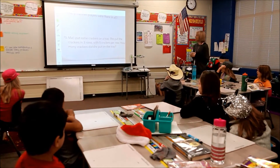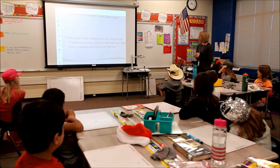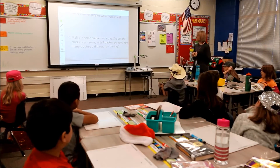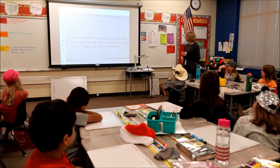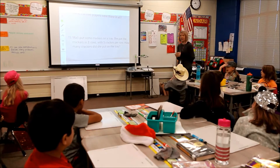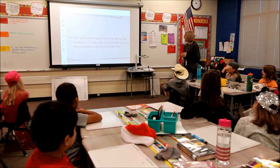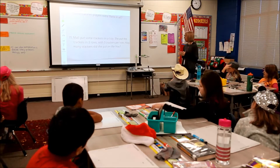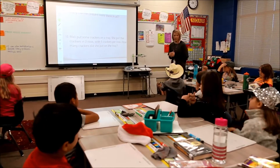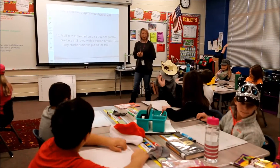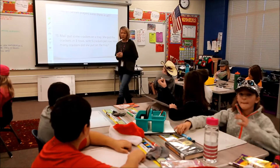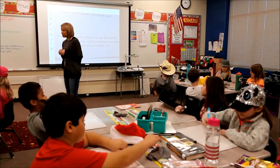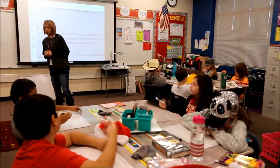Mally put some crackers on a tray. She put the crackers in three rows with five crackers per row. How many crackers did she put on the tray? Boys and girls, today I would like you to do a quick array for me. Show me what a quick array looks like.